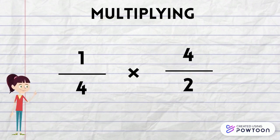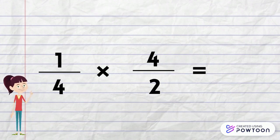Our final step is to multiply the two fractions together. So, let's start with the numerators. One times four is equal to four, so four will be our numerator. Four times two is equal to eight, so eight will be our denominator. This gives us an answer of four over eight.